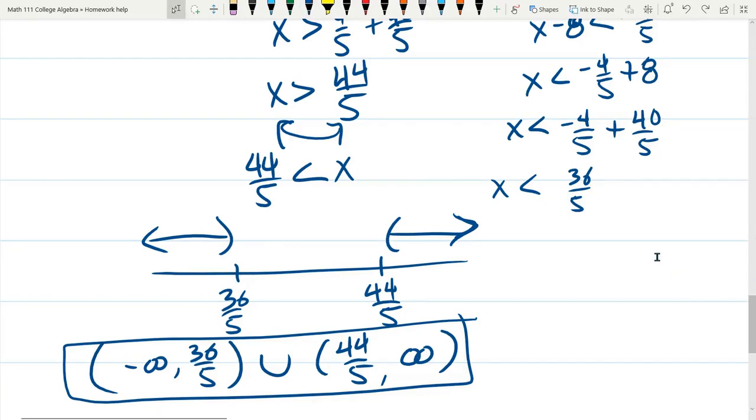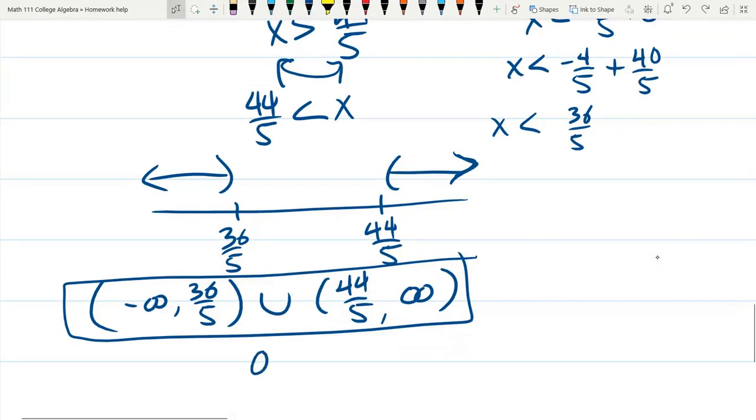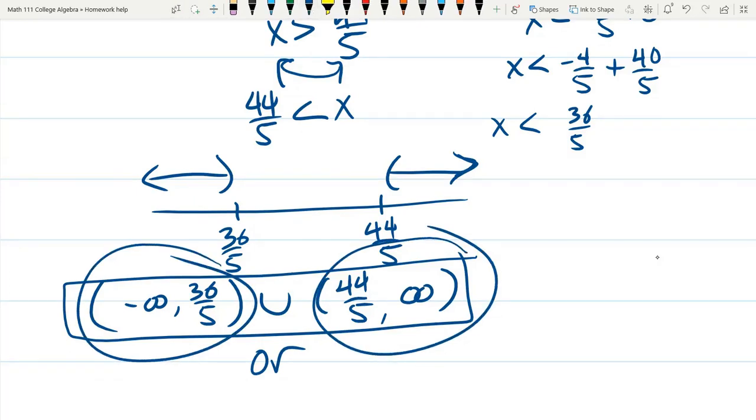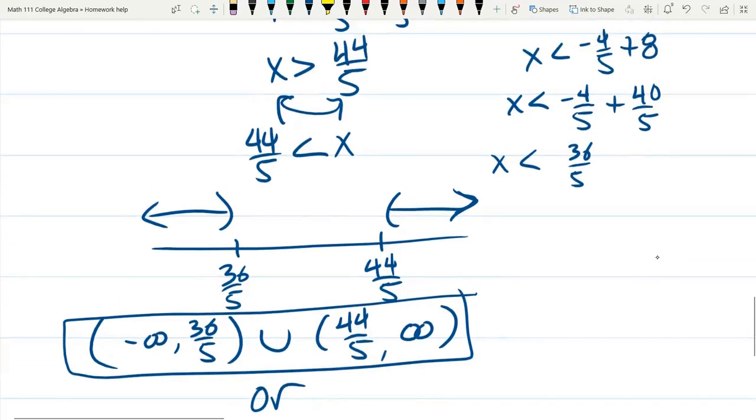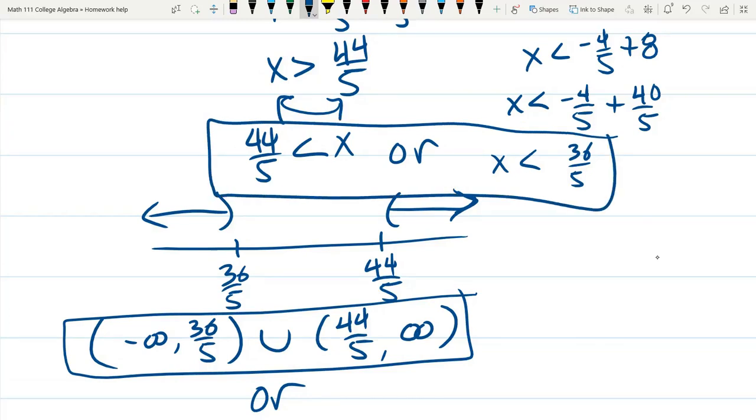And that means that this union, this means or. X either comes from this or comes from this. And we can just put the word or between these two and that will be our answer in inequality notation.